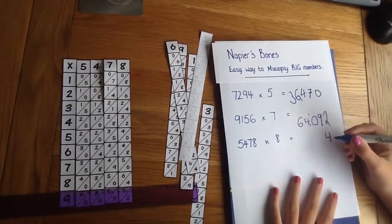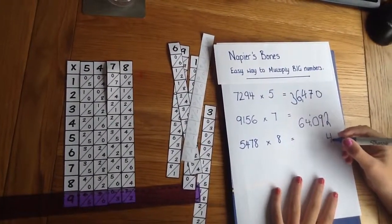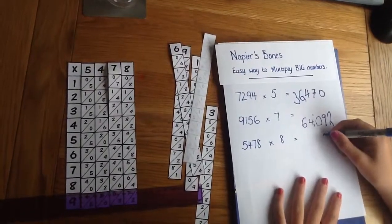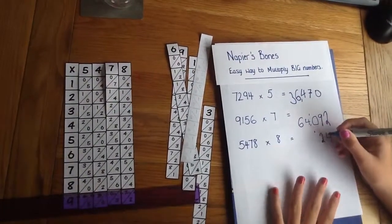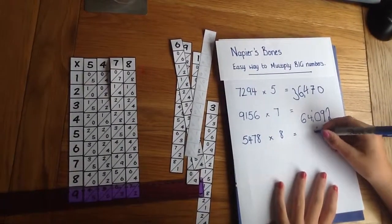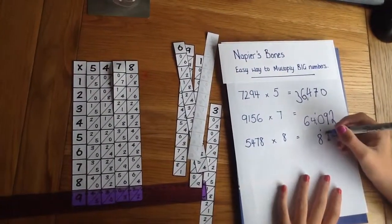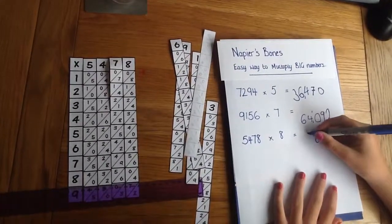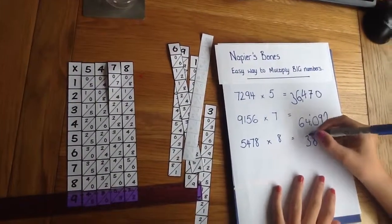So the end of your answer will be a 4. Then we're going to add diagonally the 6 and the 6 which makes 12. So 2 and then carry the 1 over. 5 and 2 make 7 plus the 1 is 8. 3 and 0 make 3 and then 4 on its own.